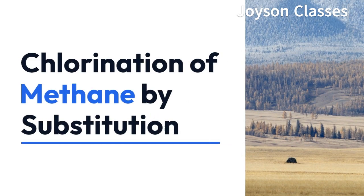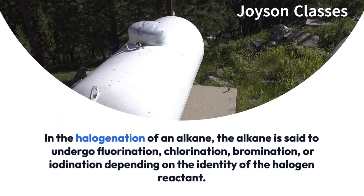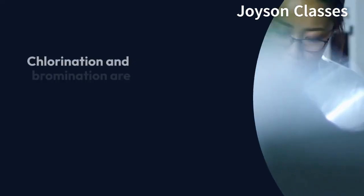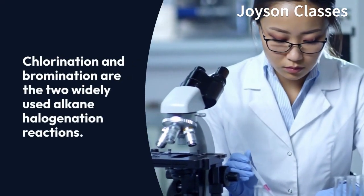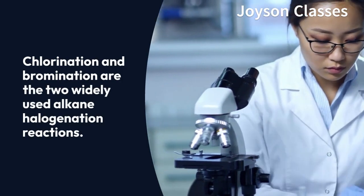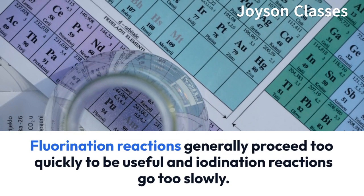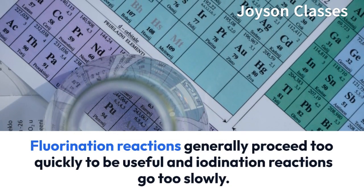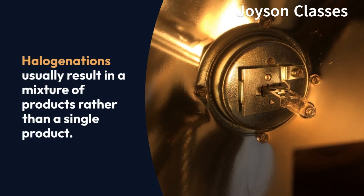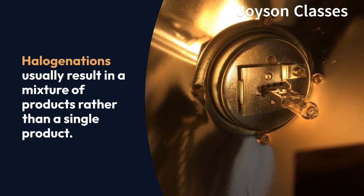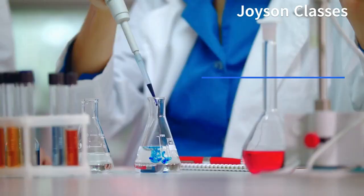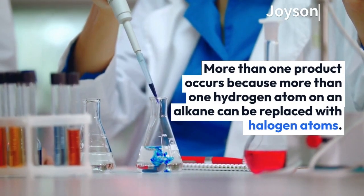In the halogenation of an alkane, the alkane is said to undergo fluorination, chlorination, bromination, or iodination depending on the identity of the halogen reactant. Chlorination and bromination are the two widely used alkane halogenation reactions. Fluorination reactions generally proceed too quickly to be useful and iodination reactions go too slowly. Halogenations usually result in a mixture of products rather than a single product, because more than one hydrogen atom on an alkane can be replaced with halogen atoms.